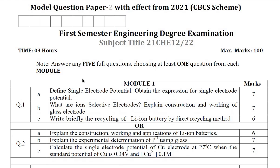Similarly, in Question Paper Set 2, there are 3 sub-questions each from Questions 1 and 2. Again, one compulsory problem will be there from Module 1.